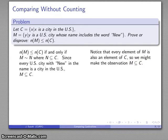And we want to formalize that, which means we want to write it down. Since every U.S. city with the word new in the name is a city in the U.S., our set M is a subset of C.